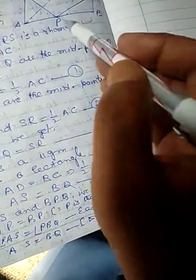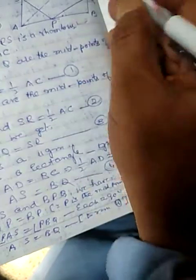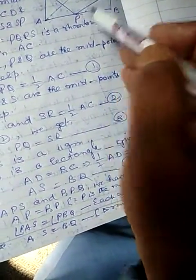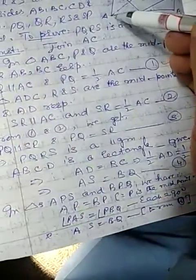Construction: We join AC. We take triangle ABC. P and Q are the midpoints of AB and BC respectively. Therefore, PQ is parallel to AC and PQ is equal to one half of AC. Let us keep it first.